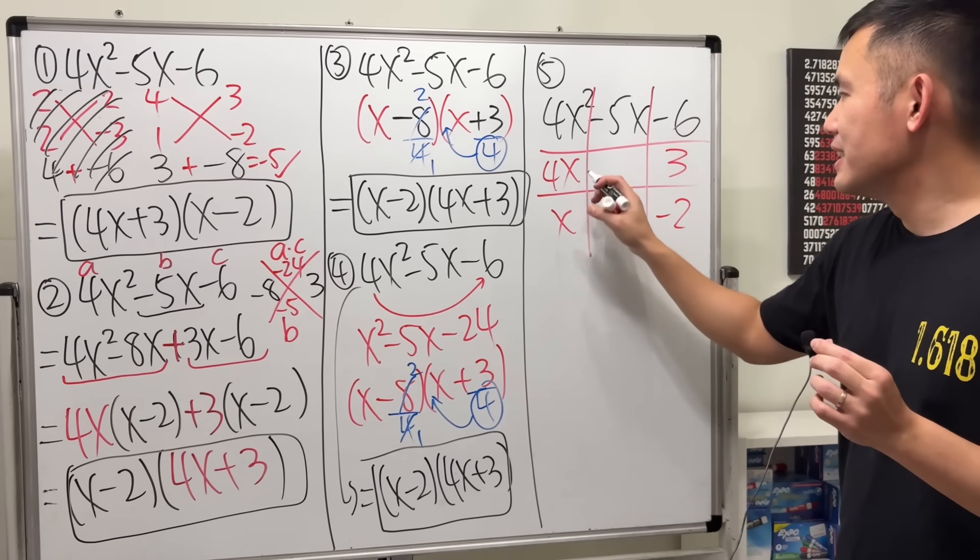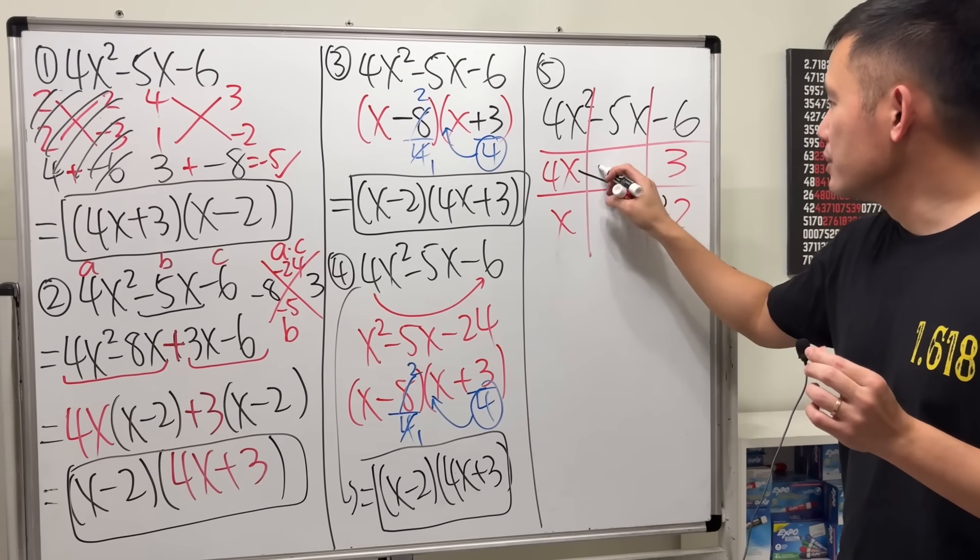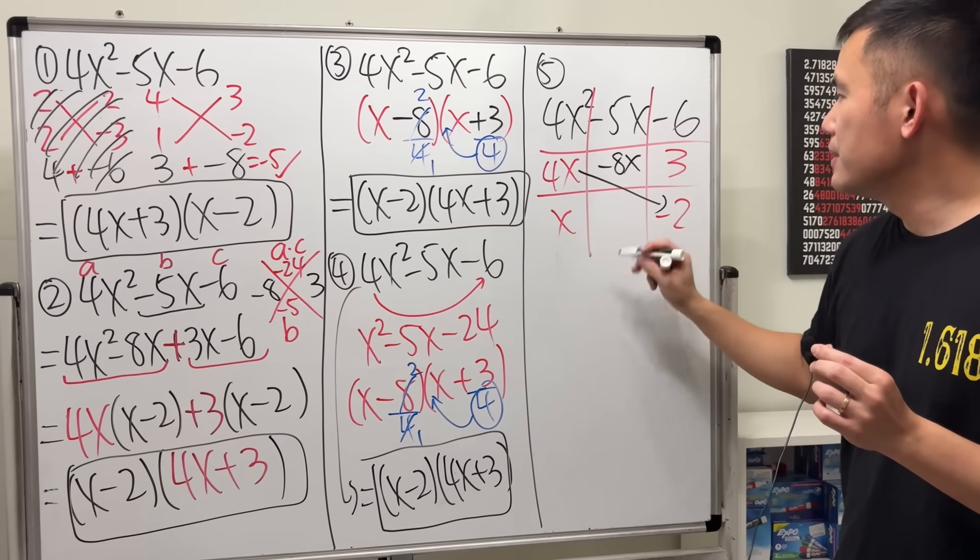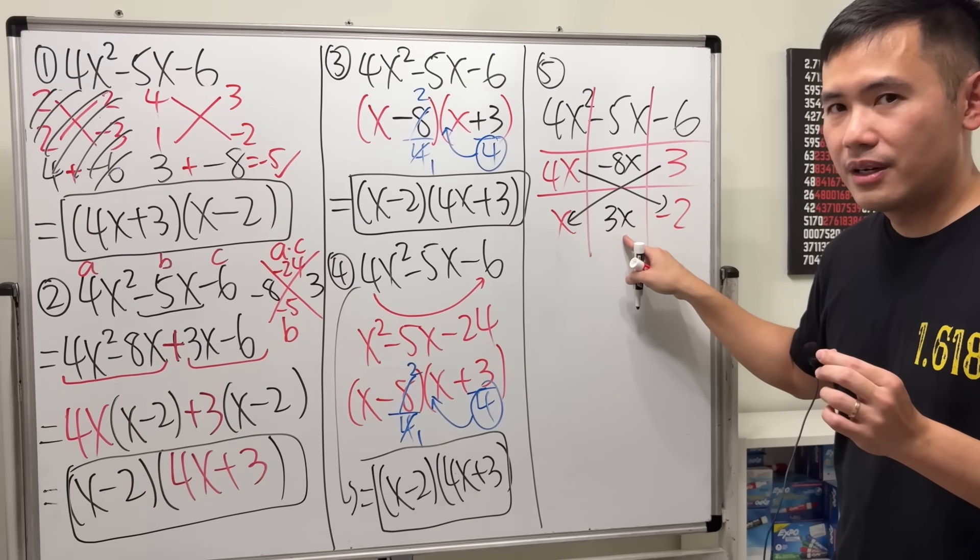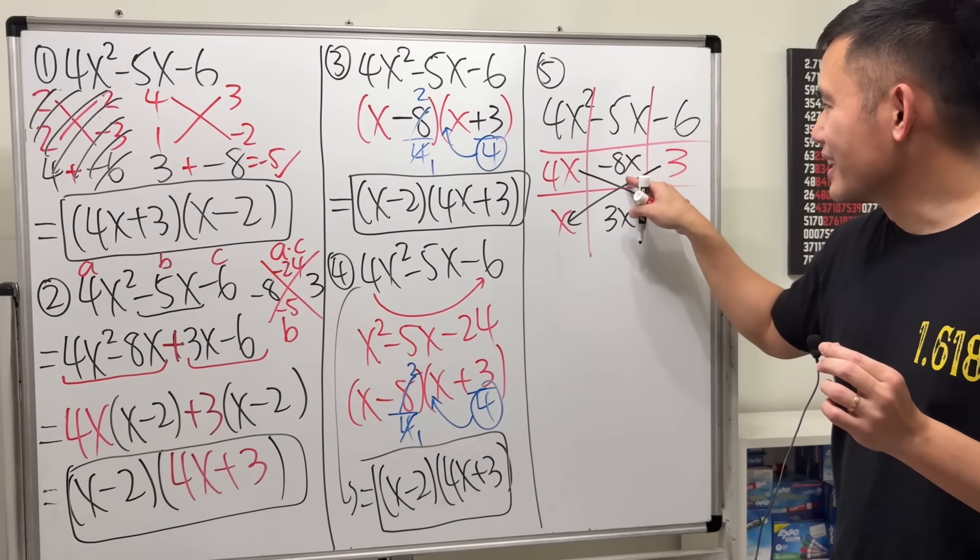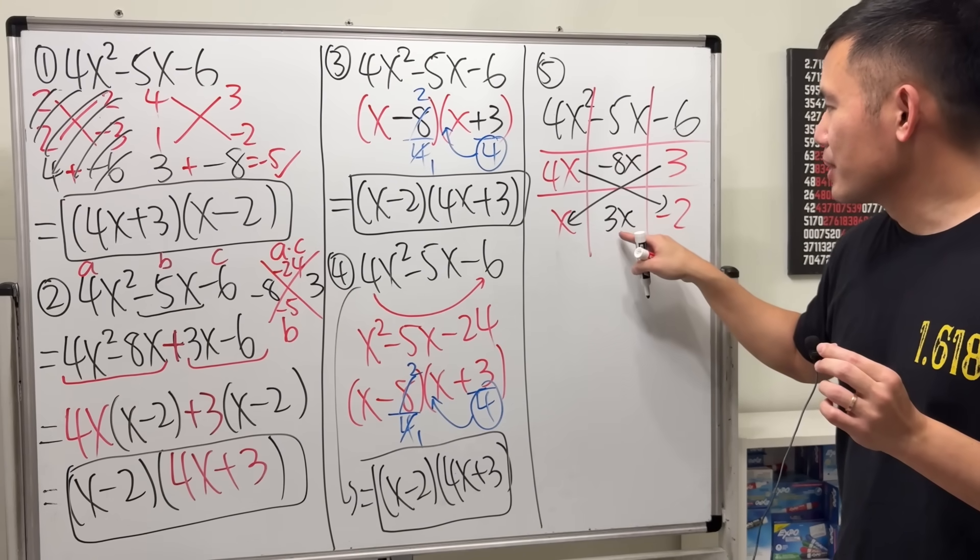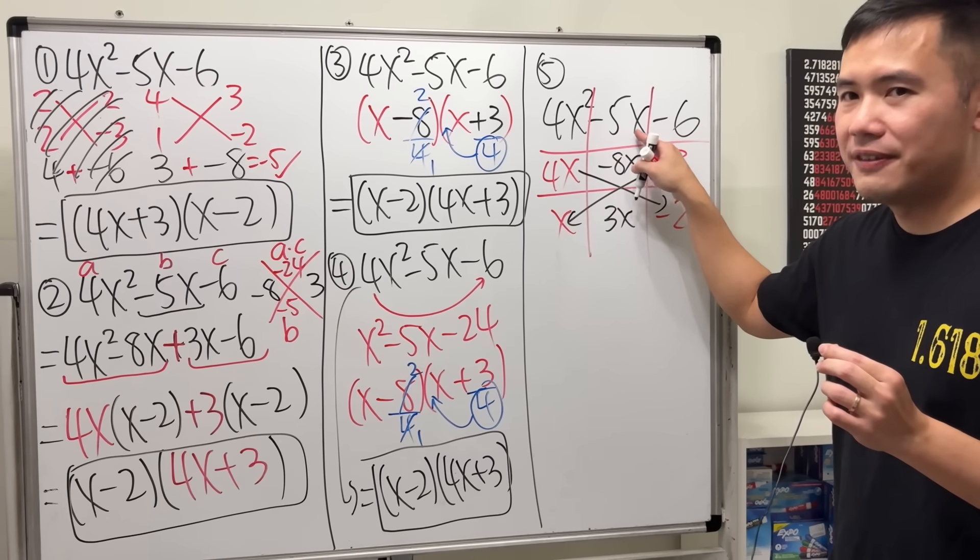How do we know if this is correct? You do this times this, which is negative 8x. Put it here. And then this times this, which is 3x. Put it here. Together, negative 8x plus 3x. Do we end up with negative 5x?